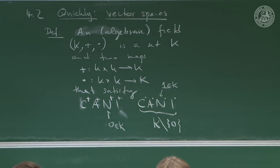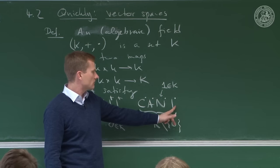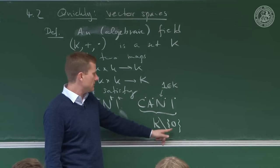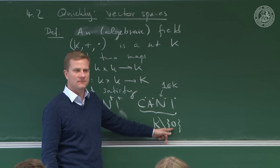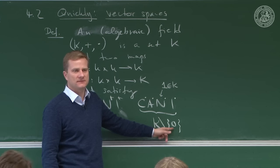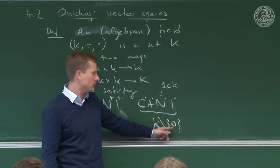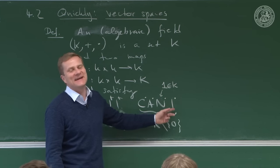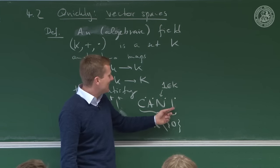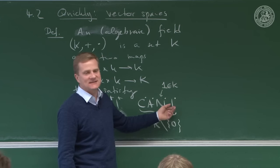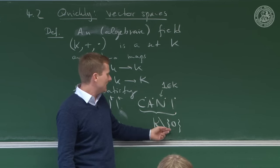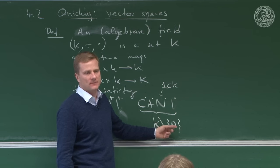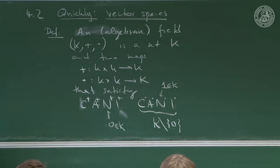Why do we have to explicitly take out the zero? Can we just choose to ignore it? Well, that is the meaning of taking it out. If you take zero, it doesn't have an inverse. So unless you take it out... that's the idea.